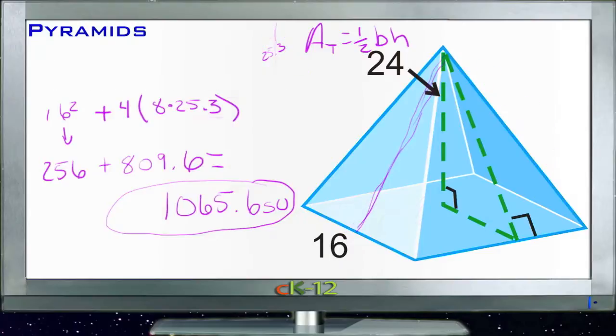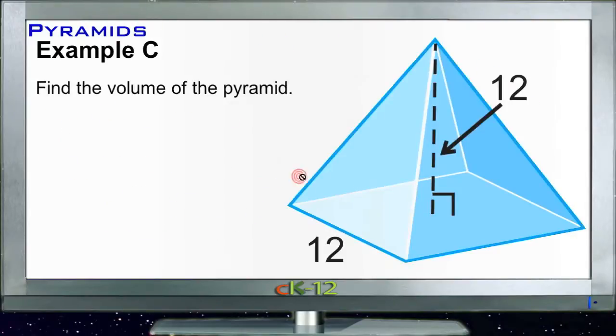Cool? All right. Let's take a look at example C. Example C says find the volume of the pyramid. So we need to use our volume formula. And our volume is one-third the area of the base times the height.